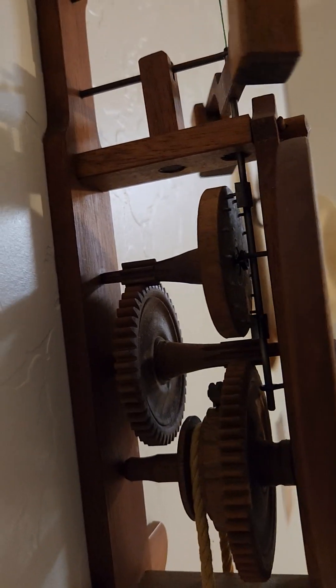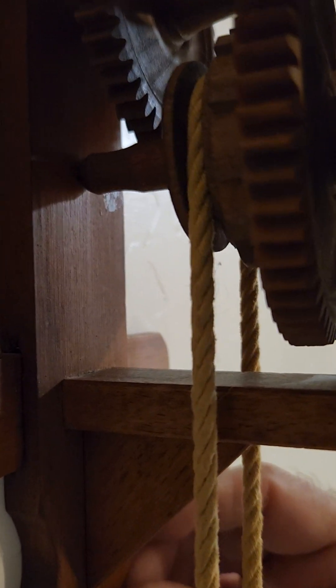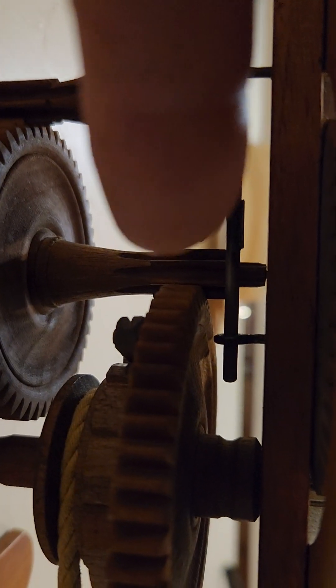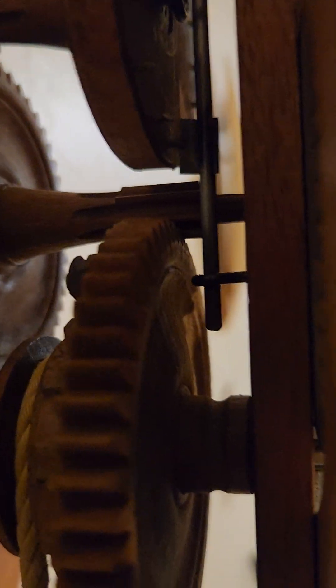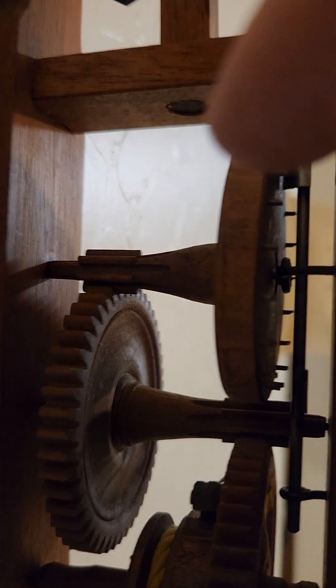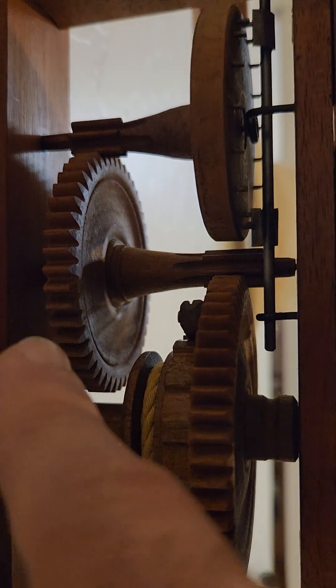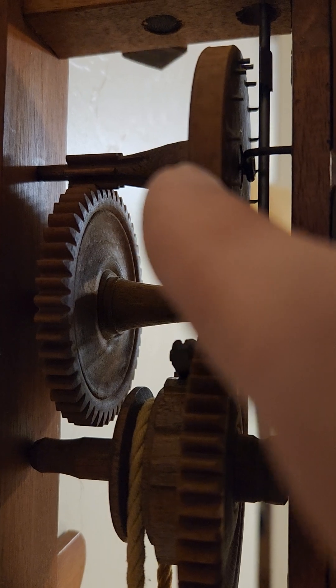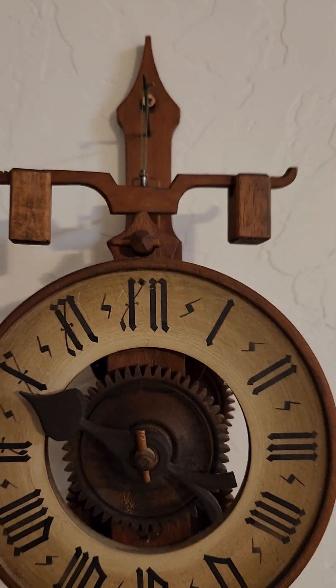The way the verge and foliate system works, is that we have a weight on this side of the rope here, pulling down on this gear, which meshes with a pinion in between, which meshes with a pinion on the back of the escape wheel. So this great wheel drives the center wheel, which drives the escape wheel. What this is doing is it's putting an impulse into the foliate here.